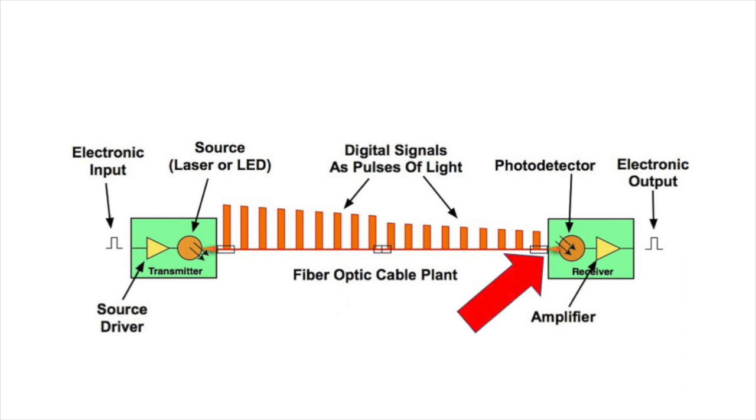At the far end of the cable plant, the light pulses are presented to a receiver. In the receiver, there is a device called a photodetector that converts light to electrical signals.